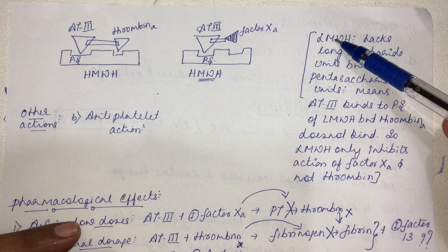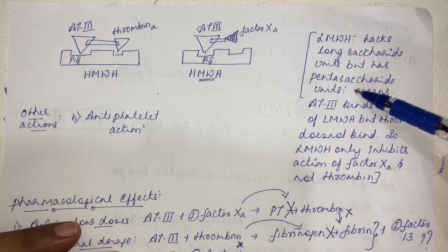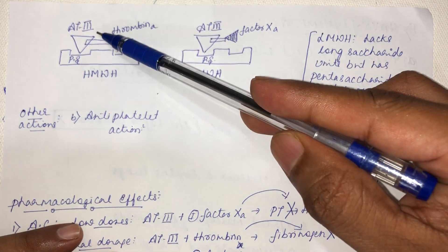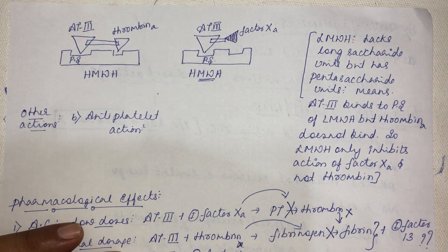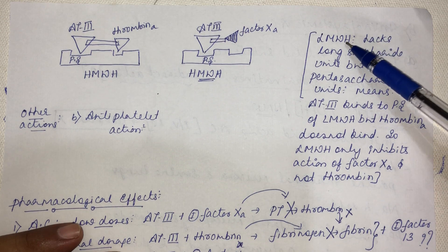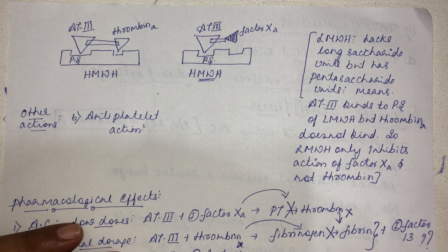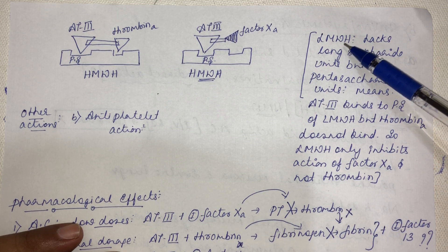Low molecular weight heparin is a short-chain polysaccharide that possesses the pentasaccharide sequence, so antithrombin-3 can still bind. However, there are not enough unoccupied monosaccharide units for thrombin to bind. Therefore, low molecular weight heparin does not cleave thrombin but will cleave factor 10a, since factor 10a only requires binding to antithrombin-3.